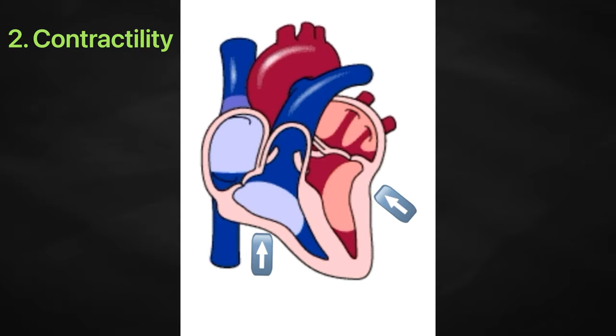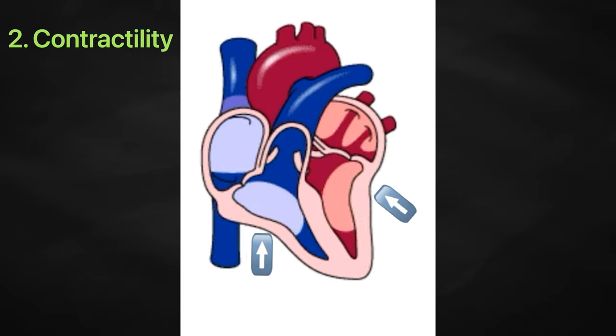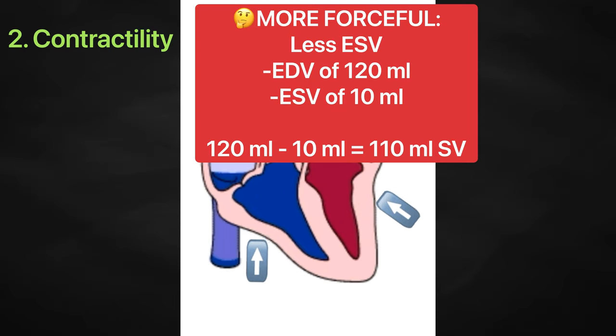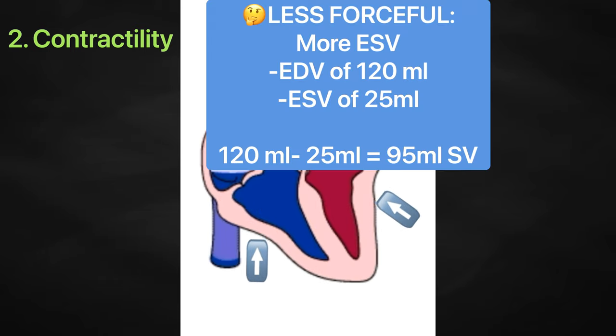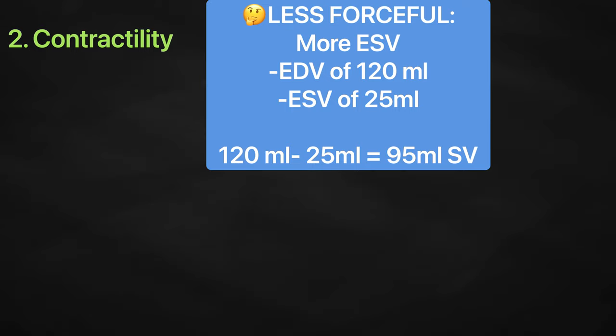Contractility refers to the force of the contraction of the heart muscle which controls stroke volume and is the primary parameter for impacting end-systolic volume or the volume of blood that remains in the ventricles after each contraction. The more forceful the contraction is, the greater the stroke volume and the smaller the end-systolic volume is. Consequently, the higher the cardiac output. On the other hand, the less forceful contraction results in a smaller stroke volume and larger end-systolic volume and eventually lower cardiac output.